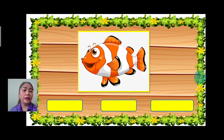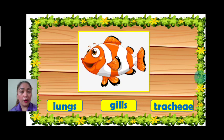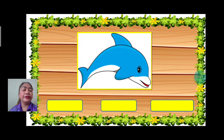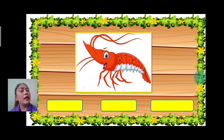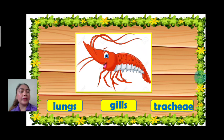Next we have fish. How does a fish breathe? Lungs, gills, or trachea? The answer is gills. Good job. Next we have dolphin. Is it lungs, gills, or trachea? The answer is lungs. Very good. Next we have shrimp. How does a shrimp breathe? Lungs, gills, or trachea? The answer is gills.